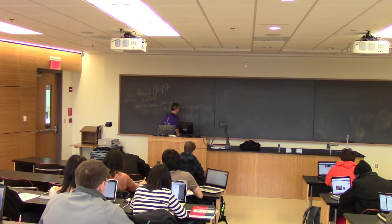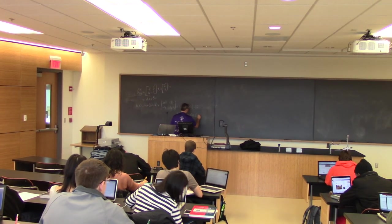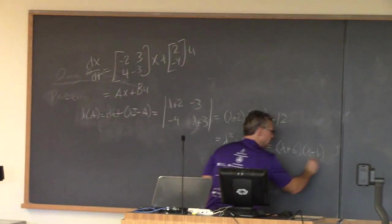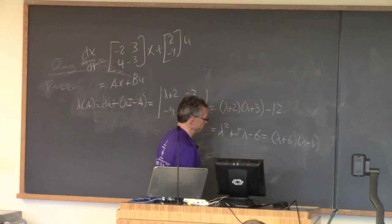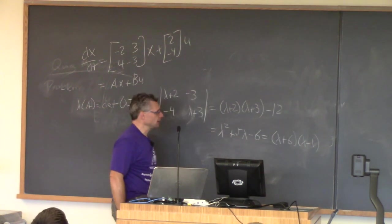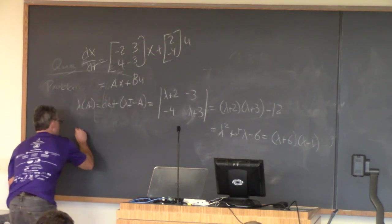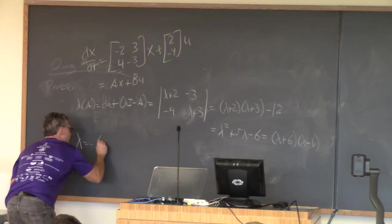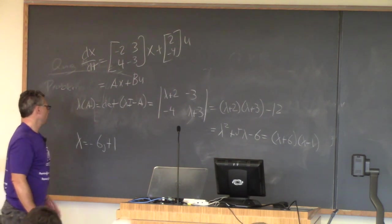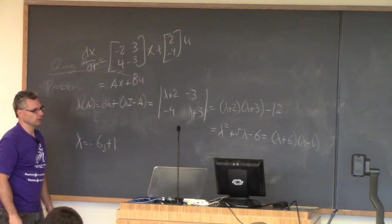We want lambda plus 6, lambda minus 1. The two eigenvalues are lambda equal minus 6 and lambda equal plus 1. Because we have this plus 1 eigenvalue, that makes the system unstable.